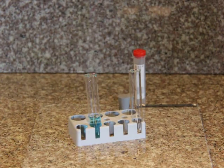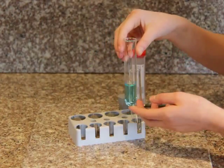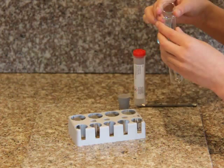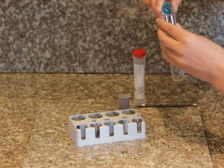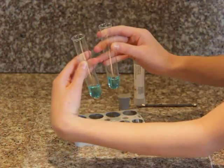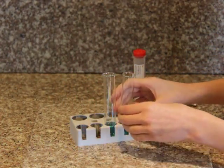To do experiment number 11, I need to pour half of the copper sulfate solution from experiment number 10 into a second test tube and set the other one aside.